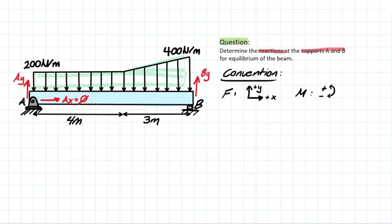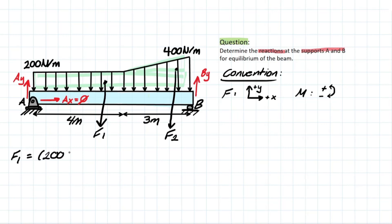Now we can get into solving the problem. First, we identify the resultant forces of the distributed loads — F1 and F2. For F1, we have the height of the distributed load, 200 N per meter, times the span it covers, which is 7 meters. These cancel and we're left with 1,400 N.